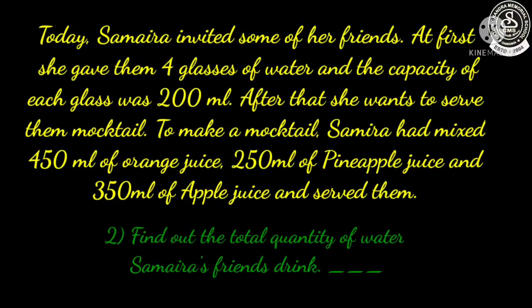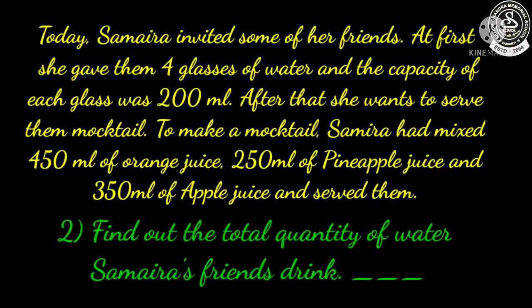Now let us see question number 2: Find out the total quantity of water Samaira's friends drank. Children, you know the quantity of one glass is 200 ml. For finding the quantity of 4 glasses, if you multiply 200 ml by 4, I think you will get the answer of the total quantity of water.